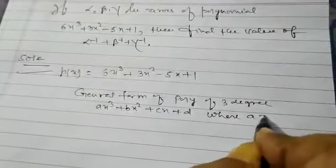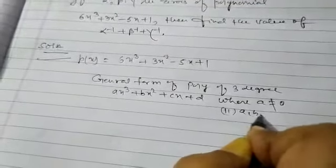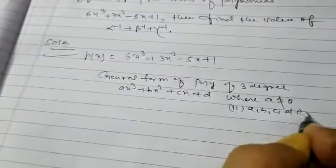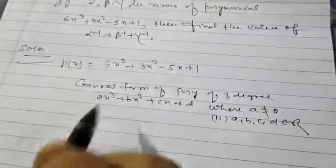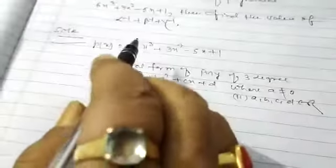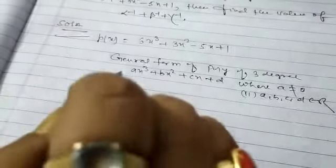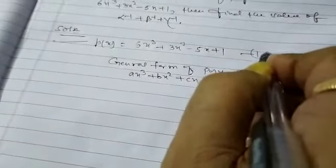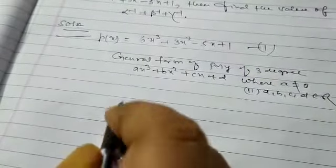Where a is not equal to zero. And a, b, c, d belong to real. And by comparing the coefficient of this general polynomial of three degree, we can find the value of a, b, c, and d.